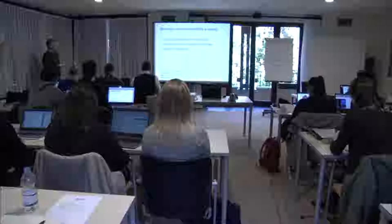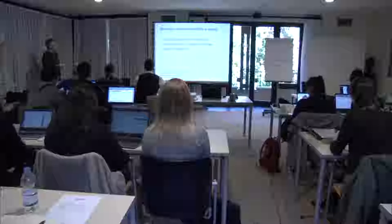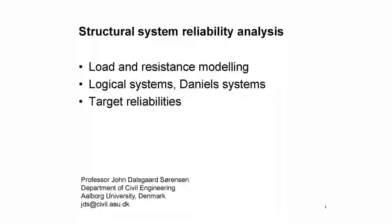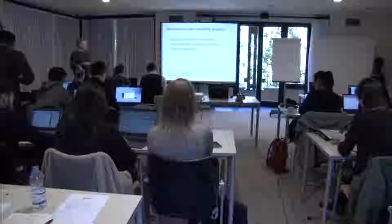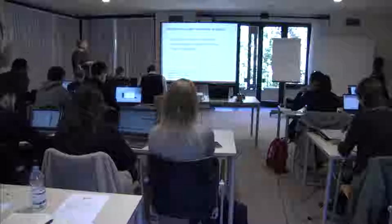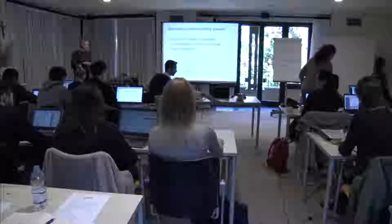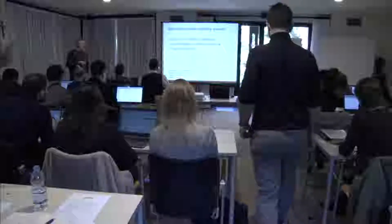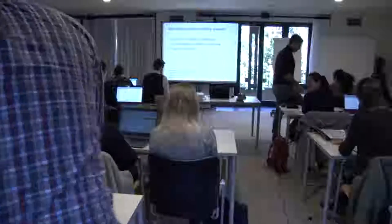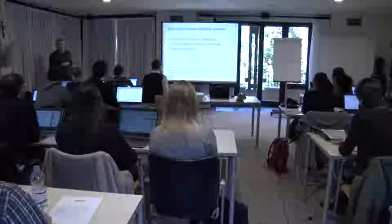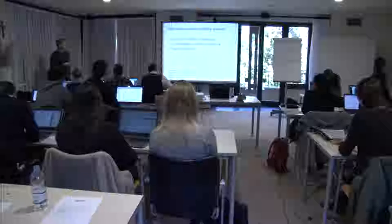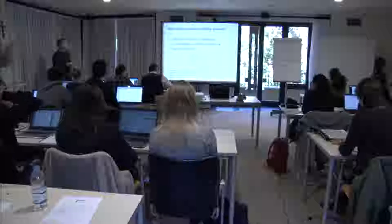There are three subjects in this lecture. The first is about modeling uncertainties within structural engineering — what typical models are used. The second is about modeling systems, including Daniels systems, and in general series and parallel systems, how they can be modeled, and how to estimate the probability of failure. At the end, there is something about target reliabilities — which values to design for.